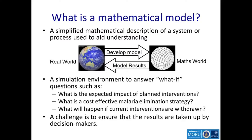I'll start by talking about what a mathematical model is and how it can be used in the context of malaria transmission and elimination. A mathematical model is a simplified description of a system or process — for example, a simplified description of the malaria transmission route in a particular country, written in mathematical language. A modeler starts with a real-world problem and question, then distills the key elements of that system, particularly the interaction between dynamical systems.